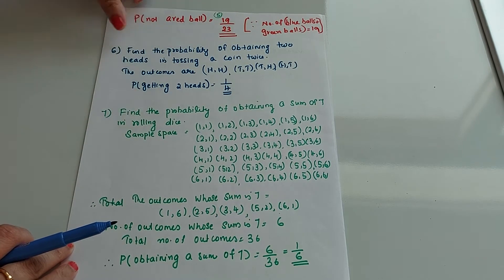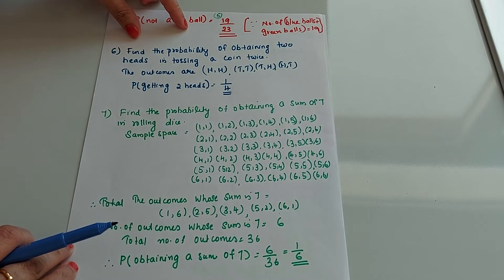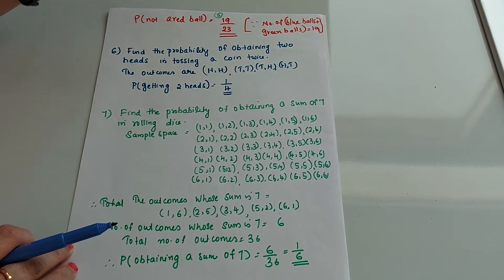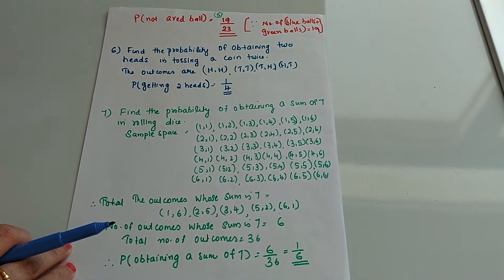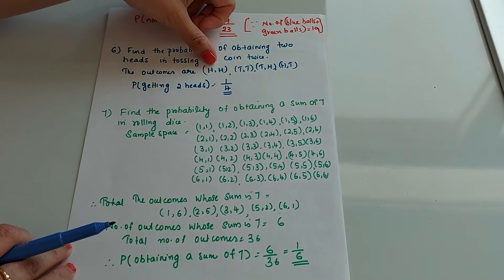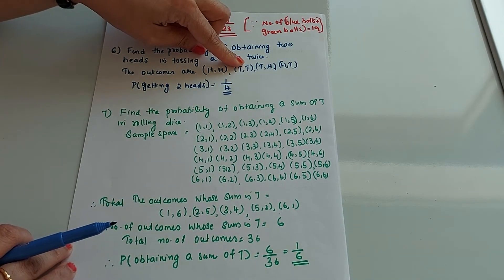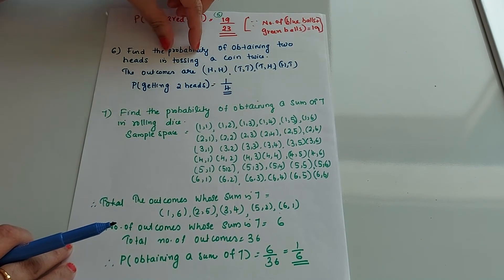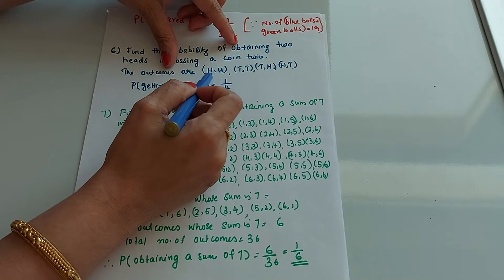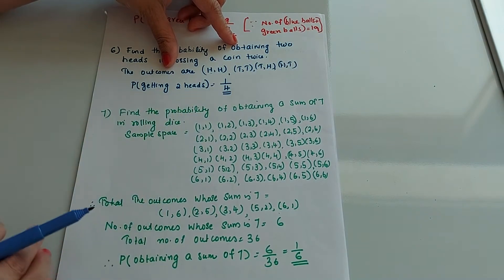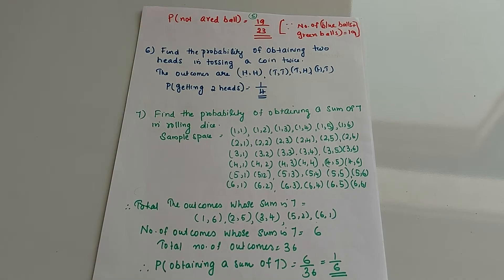Next question: find the probability of obtaining two heads when tossing a coin twice. When you toss a coin twice, the outcomes are head-head, tail-tail, tail-head, and head-tail — four outcomes in total. There is only one outcome with two heads, so probability of getting two heads equals 1 by 4.